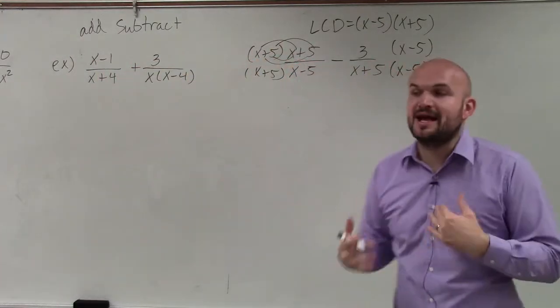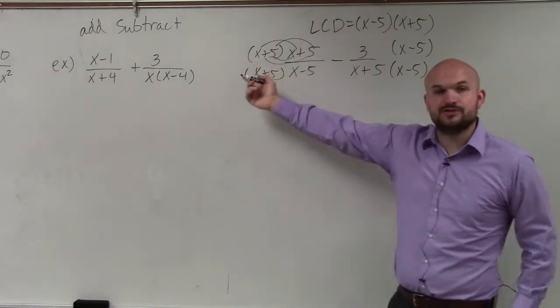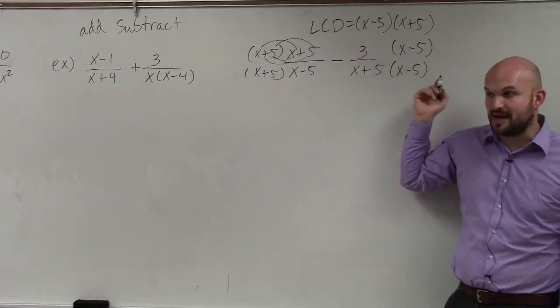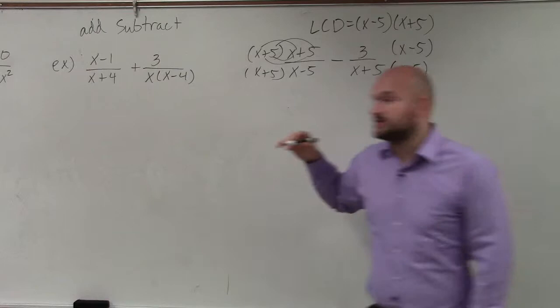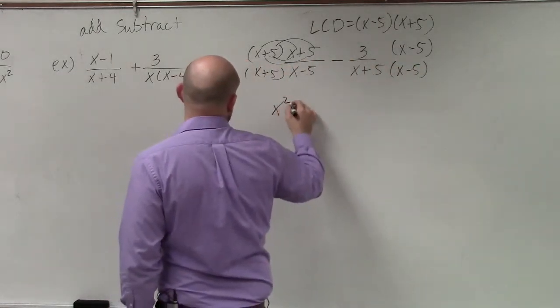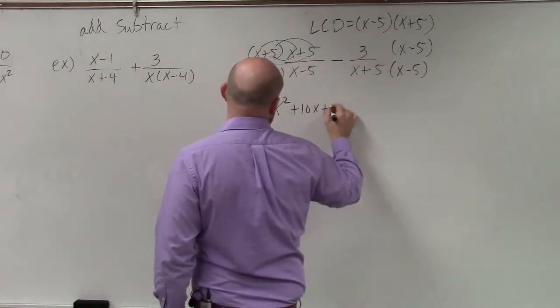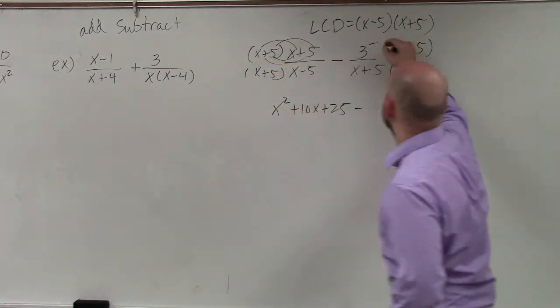So you need to make sure you multiply everything by everything. Also, you guys should know this is a binomial squared, which is going to produce a perfect square trinomial, which is x squared plus 10x plus 25 minus,